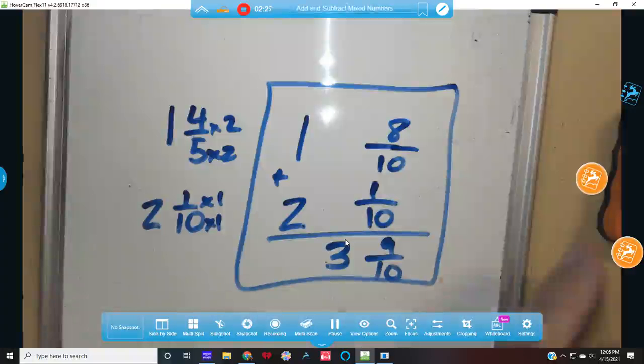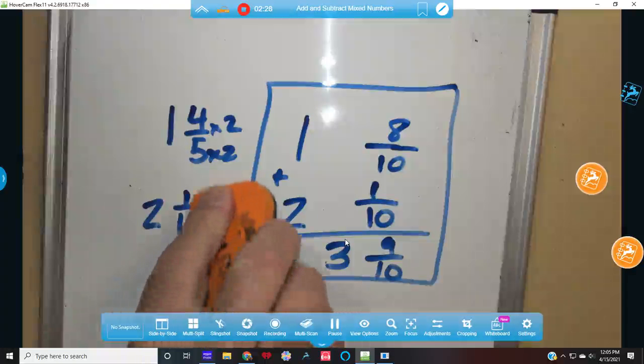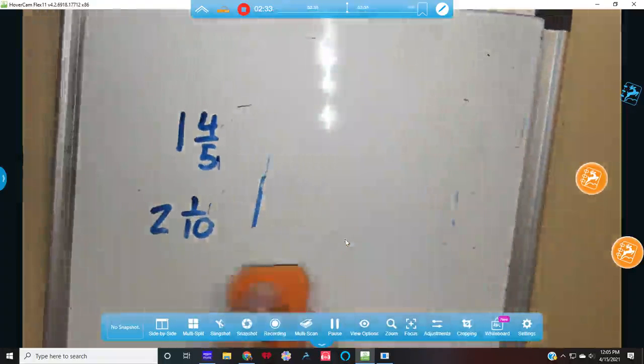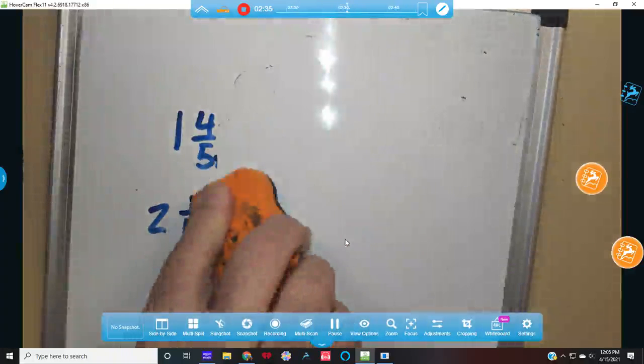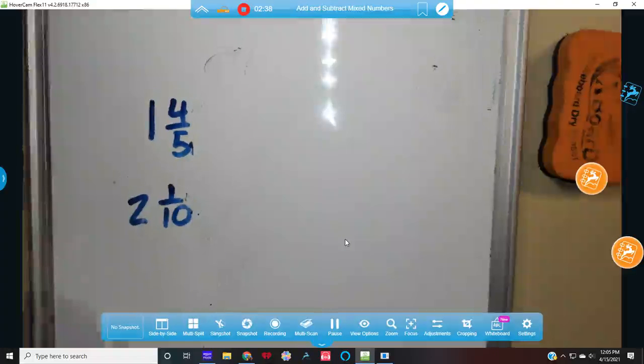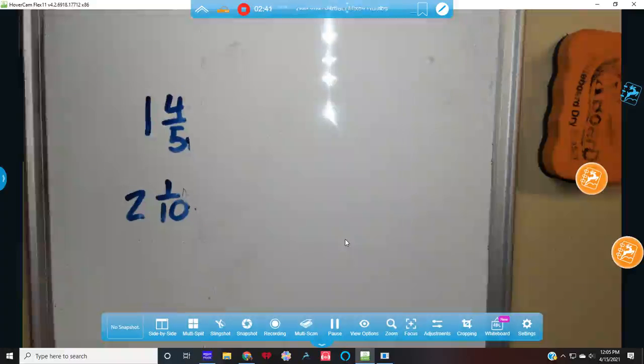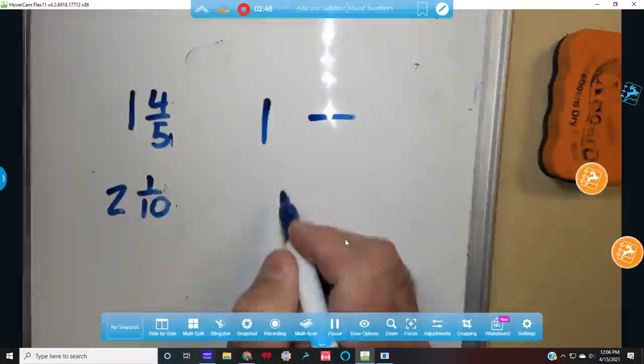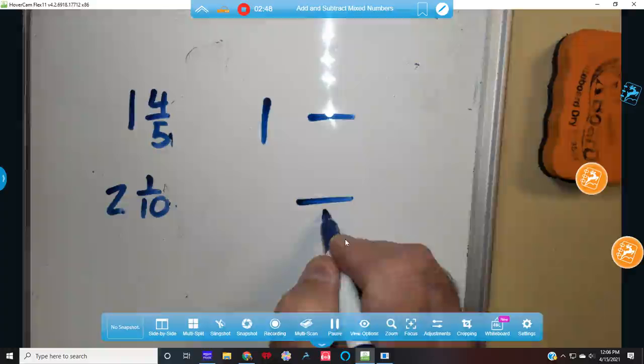Now, let's say you didn't remember that 5 and 10 were common multiples. Here's the fun part. It doesn't have to be the least common multiple in this one. It's easier because then you only have one step. But let's say you turn this into, well, I know that 5 and 10 is 50.